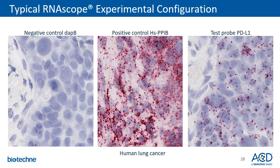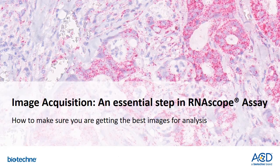Here is an example of a typical RNAscope experimental setup with proper controls as well as optimal target staining with nice punctate dots that can then be used for subsequent image analysis. With this, I would like to pass the presentation to our imaging specialist, Sardar. Thank you, Connie, for your nice introduction to the RNAscope assay.